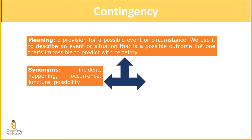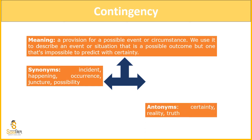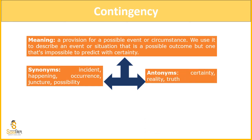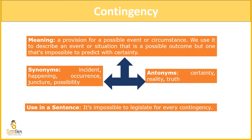Let us see some of the synonyms. Synonyms will be: incident, happening, occurrence, juncture, possibility. Every word is indicating an uncertainty — that it can happen or not. And the antonyms will be: certainty, reality, truth. These all words are indicating realness, the truth, the happening that is occurring. Using sentence: 'It is impossible to legislate for every contingency.'